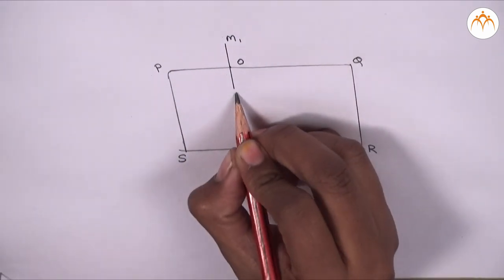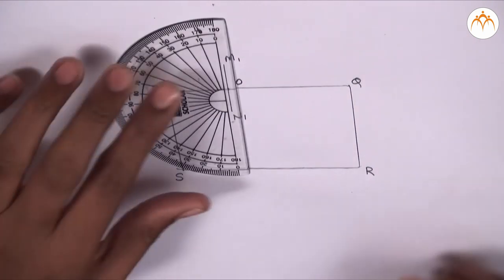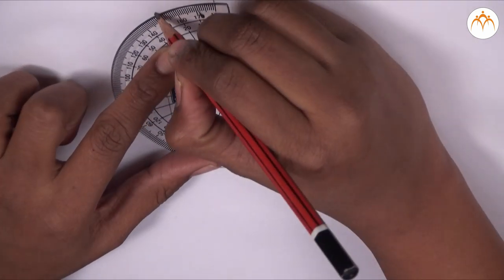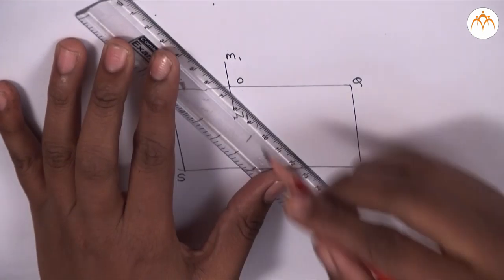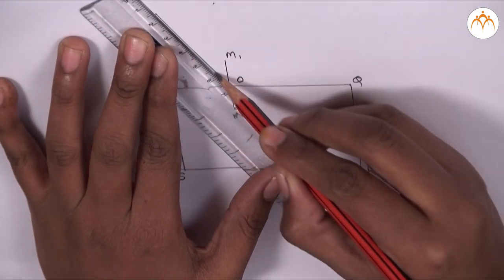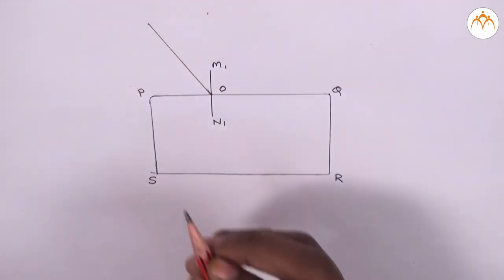The angle M1 OP is 90 degrees. Then we draw a ray passing through O and making an angle of 30 degrees. Let us call it as AOM1.